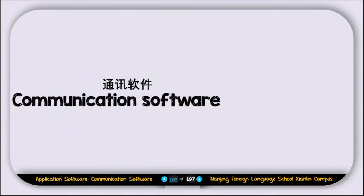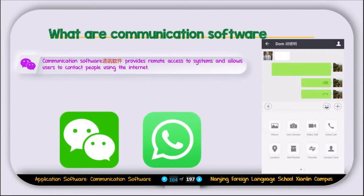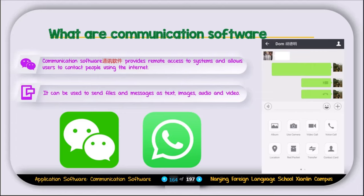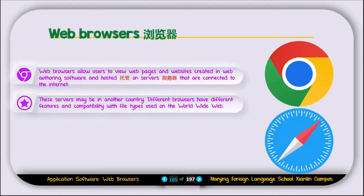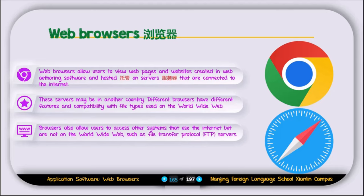The next type is communication software. Communication software provides remote access to systems and allows users to connect with people using the internet. It can be used to send files and messages as text, images, audio, and video. The next type is web browsers. The web browser allows users to view pages and websites created in web authoring software and hosted on servers connected to the internet. These servers may be in another country. Different browsers have different features and compatibilities with file types used on the worldwide web. A browser also allows users to access systems that use the internet but are not on the worldwide web, such as FTP servers.